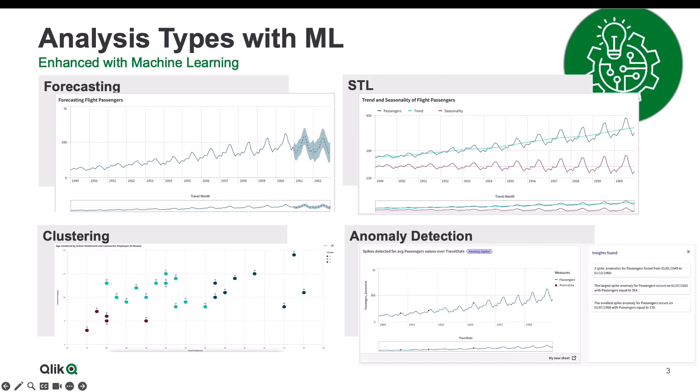The next item is STL, more commonly referred to as time series decomposition. The idea is that you can take a complex data set or a complex problem and break it down into manageable chunks. A signal can be split out into four key components: observed, trend, seasonality, and noise.